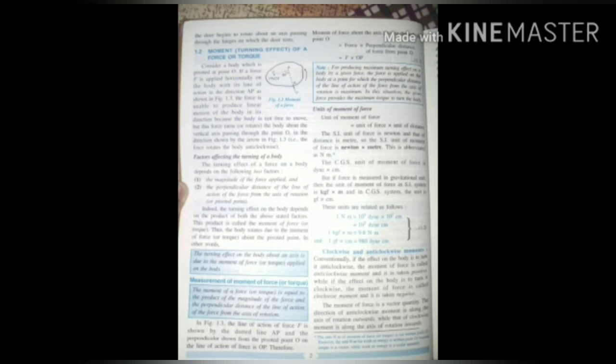The turning effect depends on two factors: how much force you apply and at what distance from the hinges you apply the force. More force or more distance from the hinges means more turning effect. You might have noticed that if you apply force at the extreme end of the door, you can open it easily, but if you apply force at the middle of the door, it is more difficult. When you apply force at the extreme end, the perpendicular distance is more, so the turning effect is more. If you apply force at the middle, the perpendicular distance is less, so the turning effect is less.